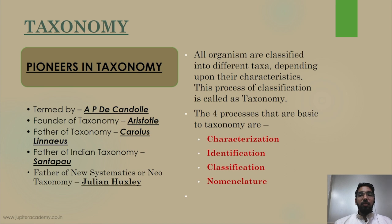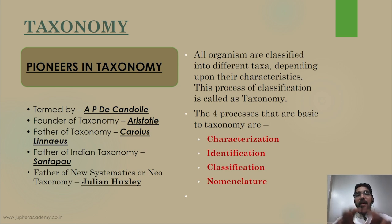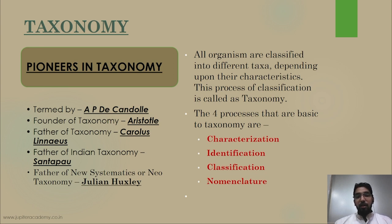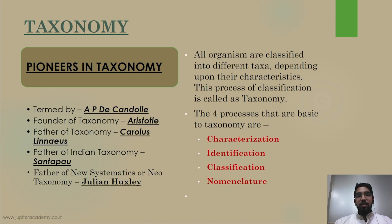Taxonomy is the classification of organisms based on their characters — organisms are put into different groups based on their characteristics. Under taxonomy there are four steps involved: characterization, identification, classification, and nomenclature. The order of these processes is: characterization first — studying the characters of the organism — then identification, then nomenclature, followed by classification.